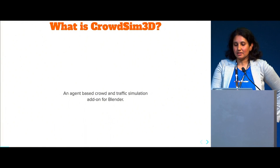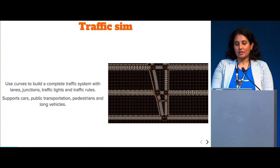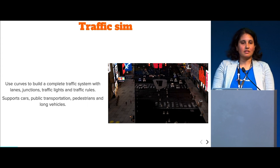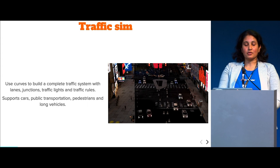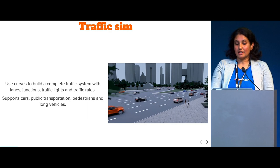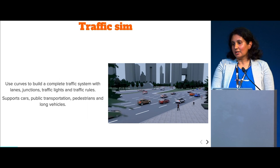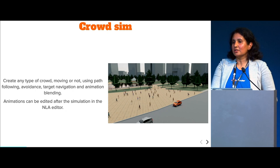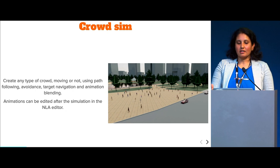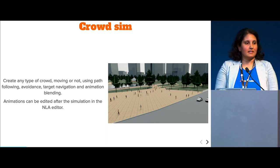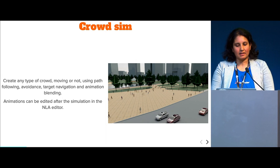CrowdSim 3D is an agent-based crowd and traffic simulation add-on for Blender. You can easily create a complete traffic system with your lanes, junctions, traffic lights, and you can even configure some traffic rules. The traffic system supports cars, public transportation, pedestrians, and also very long vehicles. With crowd simulation you can create any type of crowd, moving or not, with path following, avoidance, target navigation, and even a bit of animation blending for seamless motion.